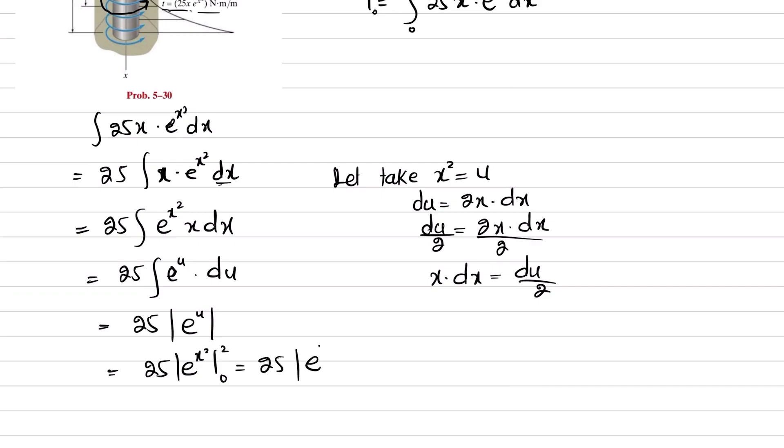We will take limits from 0 to 2, so 25 times e^(2²), which is 4, minus e^(0²). e^0 is 1.